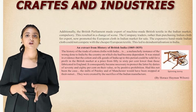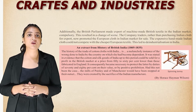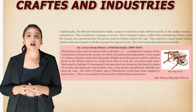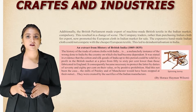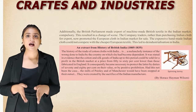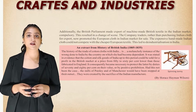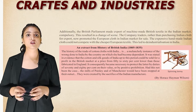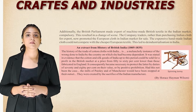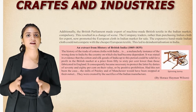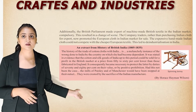From the History of British India (1805–1835): 'The history of the trade of cotton clothes with India is a melancholy instance of the wrong done to India by the country on which she had become dependent. The cotton and silk goods of India could be sold for a profit in the British market at a price 50 to 60 percent lower than those fabricated in England. It consequently became necessary to protect the latter by duties of 70 to 80 percent, or by positive prohibition. Had this not been the case, the mills of Paisley and Manchester would have been stopped at their outset. They were created by the sacrifice of Indian manufacturers.'